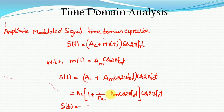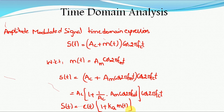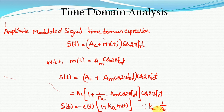We can write Ac cos(2π·Fc·t) as c(t) and Am cos(2π·Fm·t) as m(t). Letting Ka = 1/Ac, which is called the amplitude sensitivity, the final expression of the amplitude modulated signal becomes S(t) = c(t) · [1 + Ka · m(t)]. This is the procedure for deriving the time domain expression of an amplitude modulated signal from the message signal and carrier signal. Thank you.